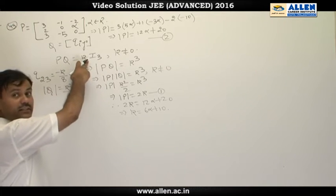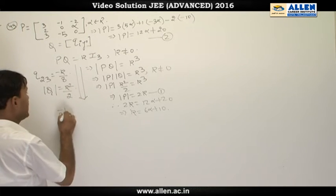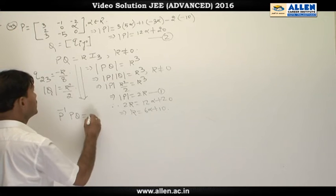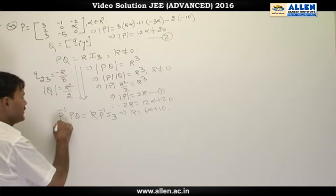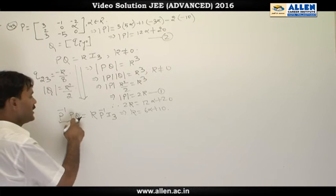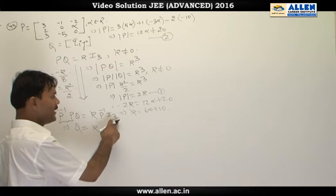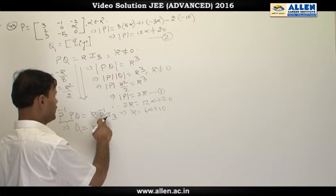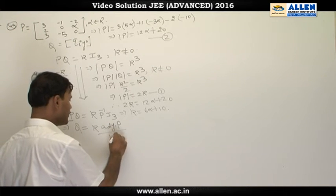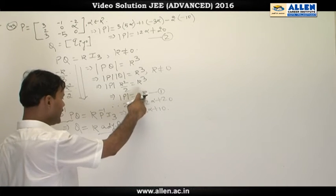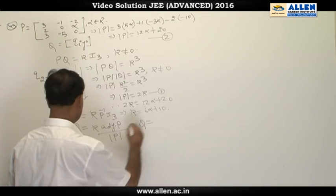Pre-multiplying by P⁻¹ gives P⁻¹·P·Q = k·P⁻¹·I₃, so Q = k·P⁻¹. From the formula P⁻¹ = adj(P) / det(P), and since det(P) = 2k, we get Q = k · adj(P) / (2k) = adj(P) / 2. This allows us to compute individual elements of Q from the adjoint of P.